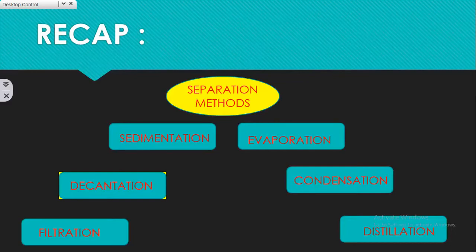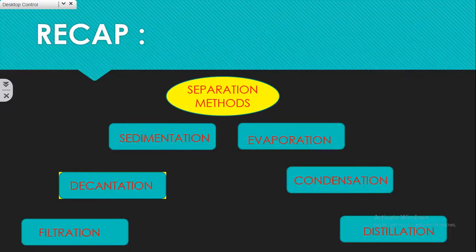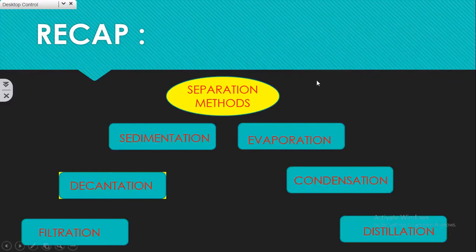The next process is filtration. It involves the use of a filtering device which retains the insoluble impurities and allows only the liquid to pass through. The next method is evaporation, where liquid is vaporized by heat, leaving solid particles behind. Those liquid parts can be brought back by condensation. When evaporation and condensation occur simultaneously, it is known as distillation.